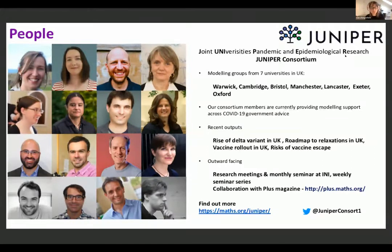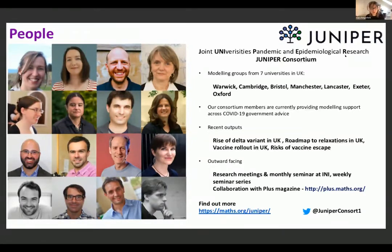Juniper is a group of seven modelling groups from seven different universities: Warwick, Cambridge, Bristol, Manchester, Lancaster, Exeter, and Oxford. The consortium is jointly led by Professor Julia Gog and Professor Matt Keeling, and is currently providing modelling support across the UK regarding COVID-19 to various government advice bodies. In particular, most of the co-investigators sit on SPI-M.